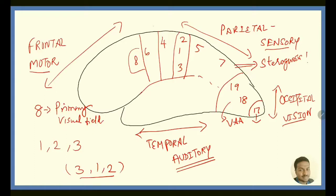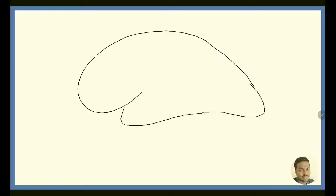Areas 6 and 4 are concerned with motor fibers, especially corticospinal and corticobulbar tracts.